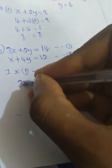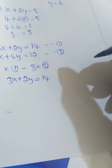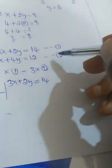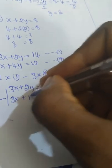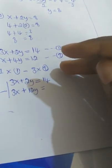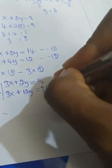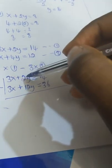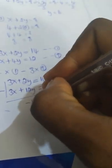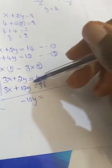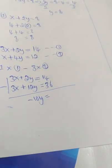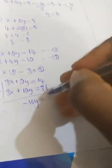From there we have 3x plus 2y equal to 14, minus 3 times x plus 4y, which gives 3 times 4y equal to 12y, equal to 3 times 12 which is 36. So 3x minus 3x cancels out, and we are left with 2y minus 12y, which is minus 10y, equal to 14 minus 36.